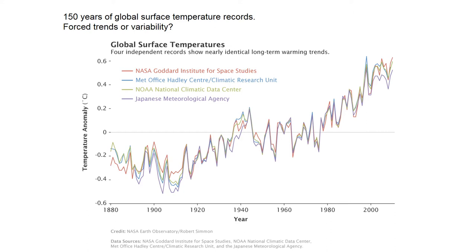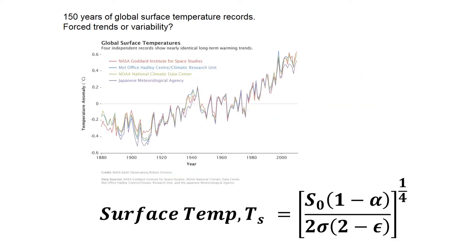Regardless of how you treat the data, you always get this warming trend — it's a really robust feature. You can see that in the early 20th century it was a lot colder than it is now. We want to explain this overall trend, but also the variability within it — those little ups and downs. The medium we'll use is this energy balance equation, considering changes in solar power, planetary reflectivity, and atmospheric emissivity.